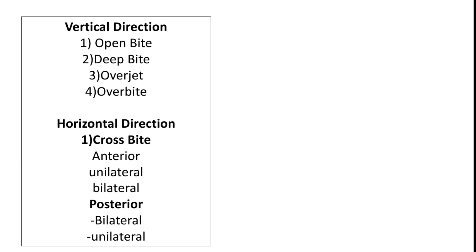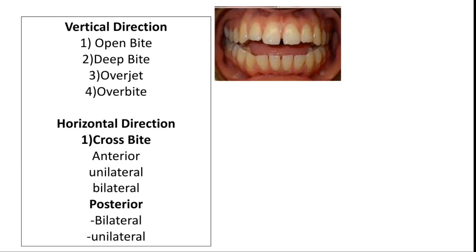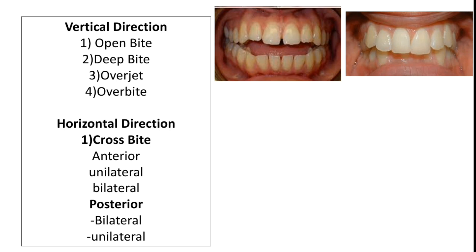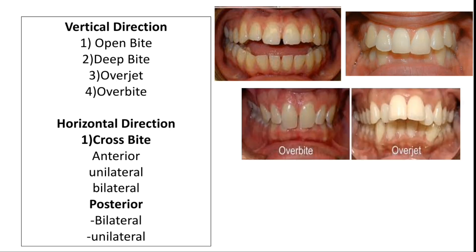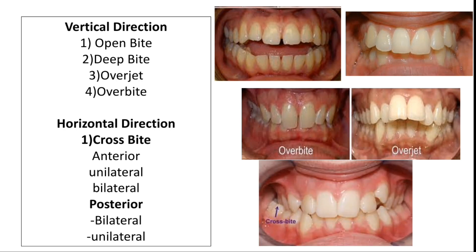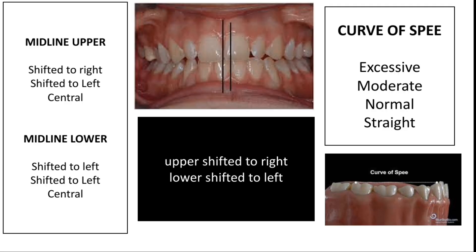Classification of malocclusion is noted in the anterior-posterior direction. Internally we look for vertical issues — open bite, deep bite, overjet, and overbite. In the horizontal direction we look for crossbite, which can be anterior, posterior, unilateral, or bilateral.